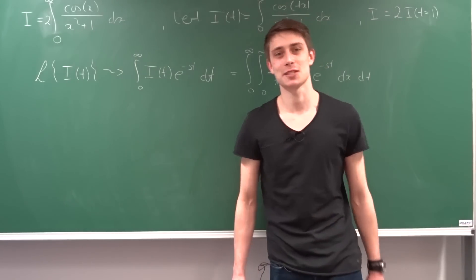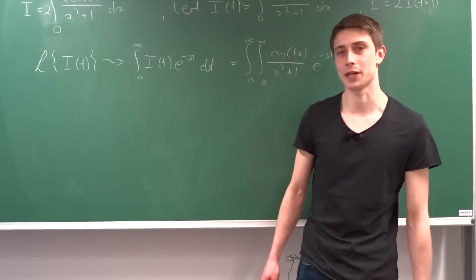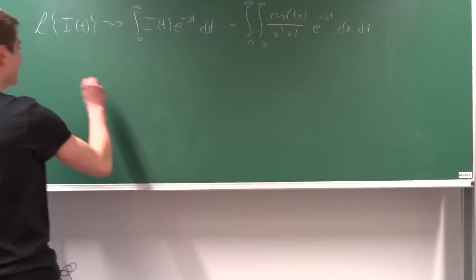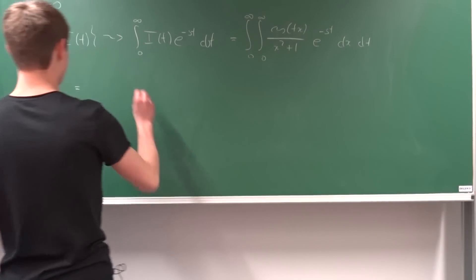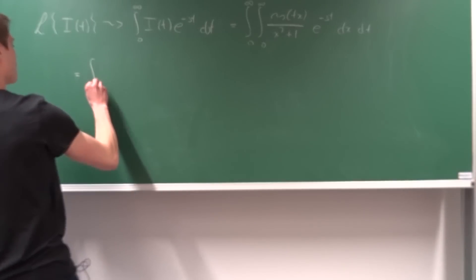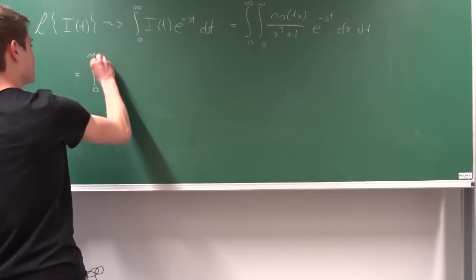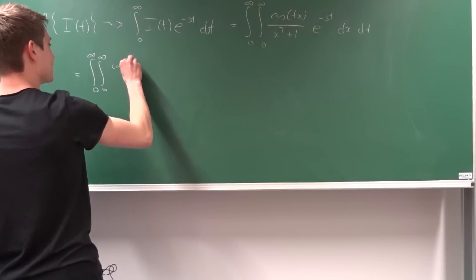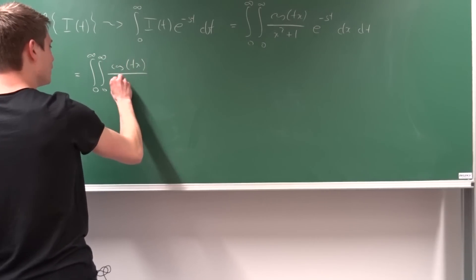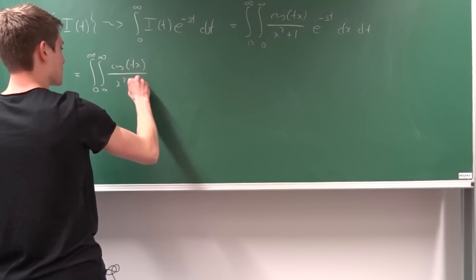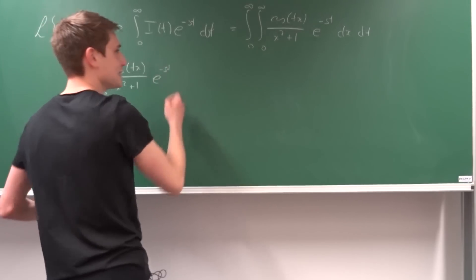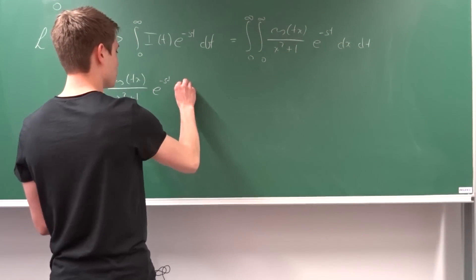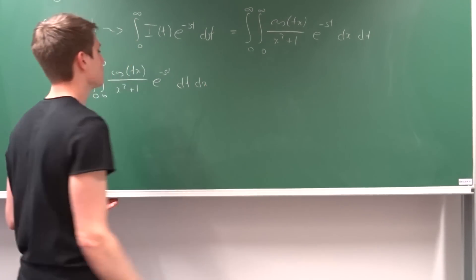So this is now going to be equal to the integral from 0 to infinity of the integral from 0 to infinity of cosine of t times x over x squared plus 1 times e to the minus st — and we've changed the order of integration, so we are going to do the dt integral first and then dx.